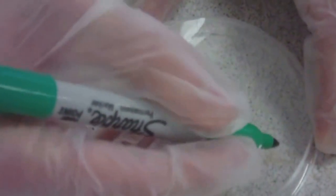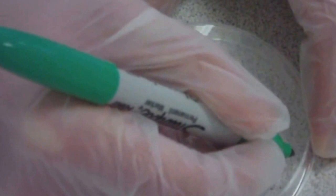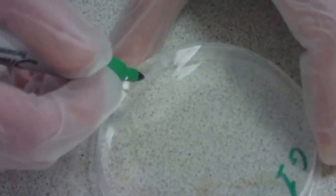Using a marker pen on the bottom of the agar plate, write your group number, date, and bacterium name.